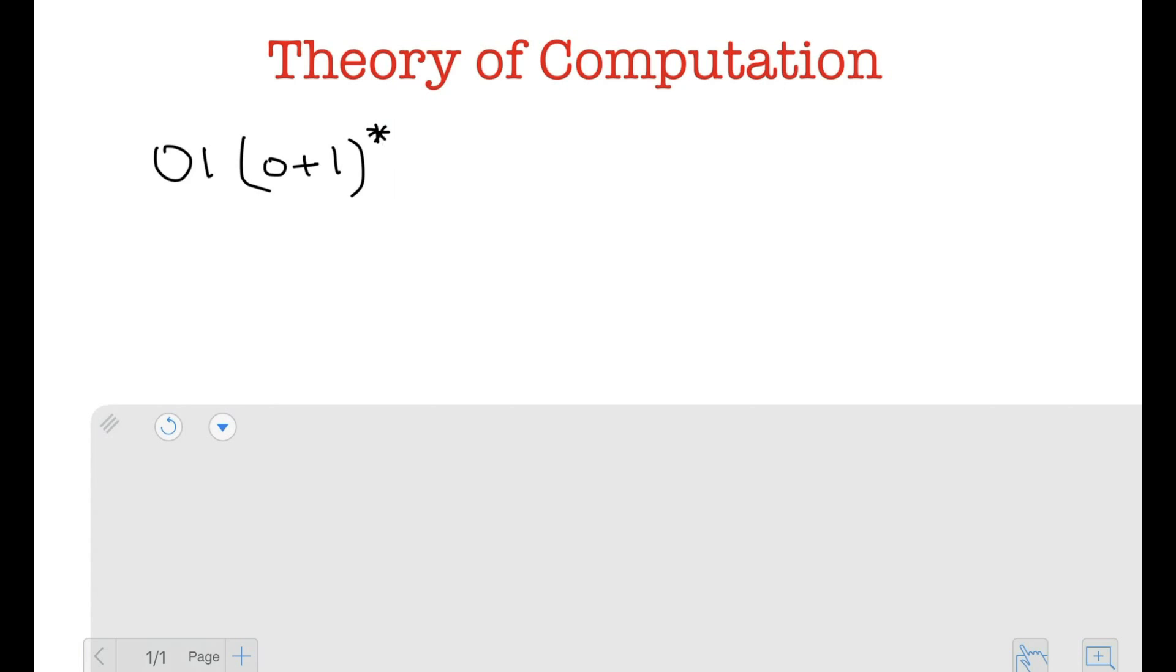So the regular expression would be 01 followed by zero plus one star. If I want to draw the NFA for this, I'm going to say I have a state q0, which goes to a state q1 on zero. And q1 goes to q2 on a one, which is a final state. And q2 just loops itself on a zero or a one.